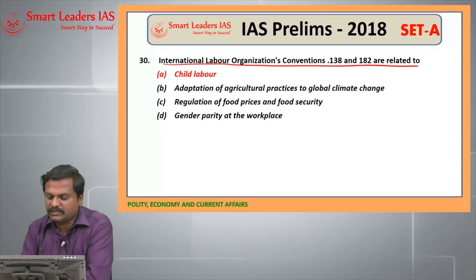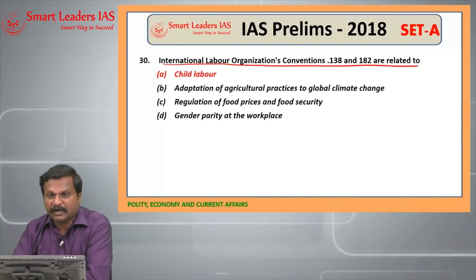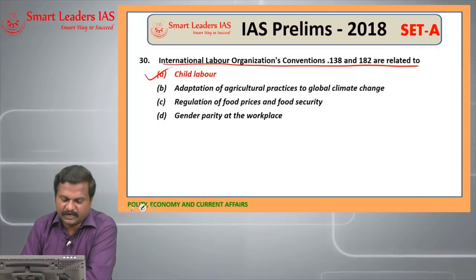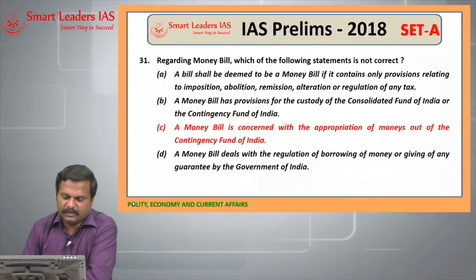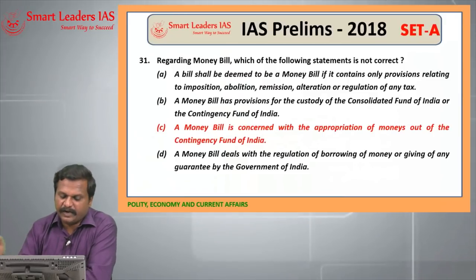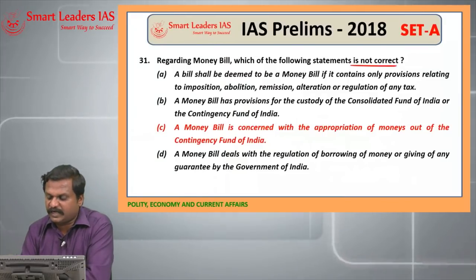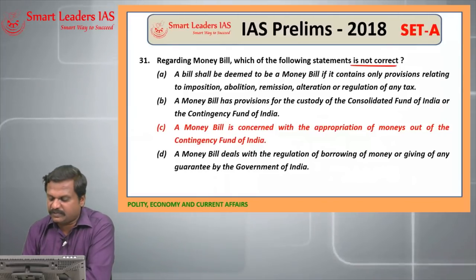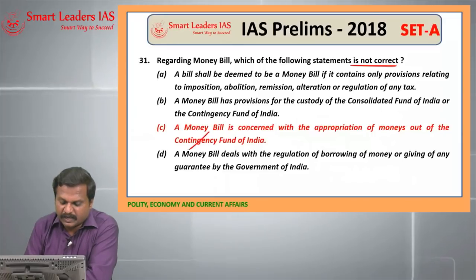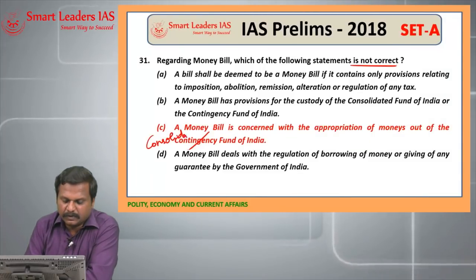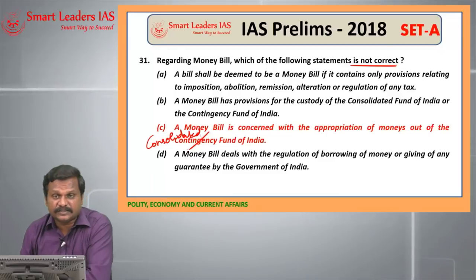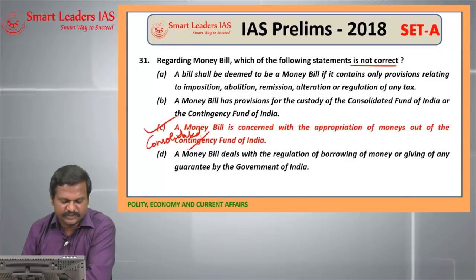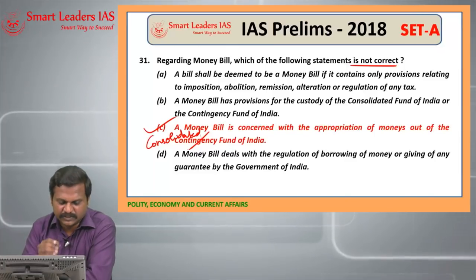30th question: ILO Convention ratified by India — Convention numbers 138 and 182 — is related to child labour. So the 30th answer is child labour. 31st question regarding money bill: the C statement is not correct because a money bill is concerned with the appropriation of money out of the Consolidated Fund of India, not out of the Contingency Fund of India. Wrong statement is asked, so C is the wrong statement; other statements are right. The answer for 31 is C.